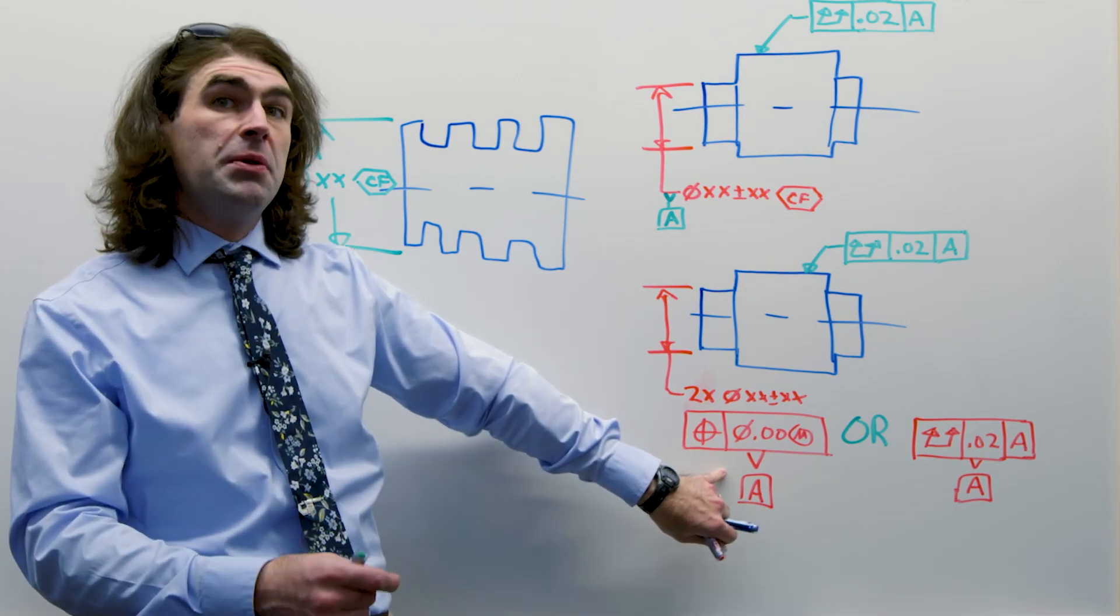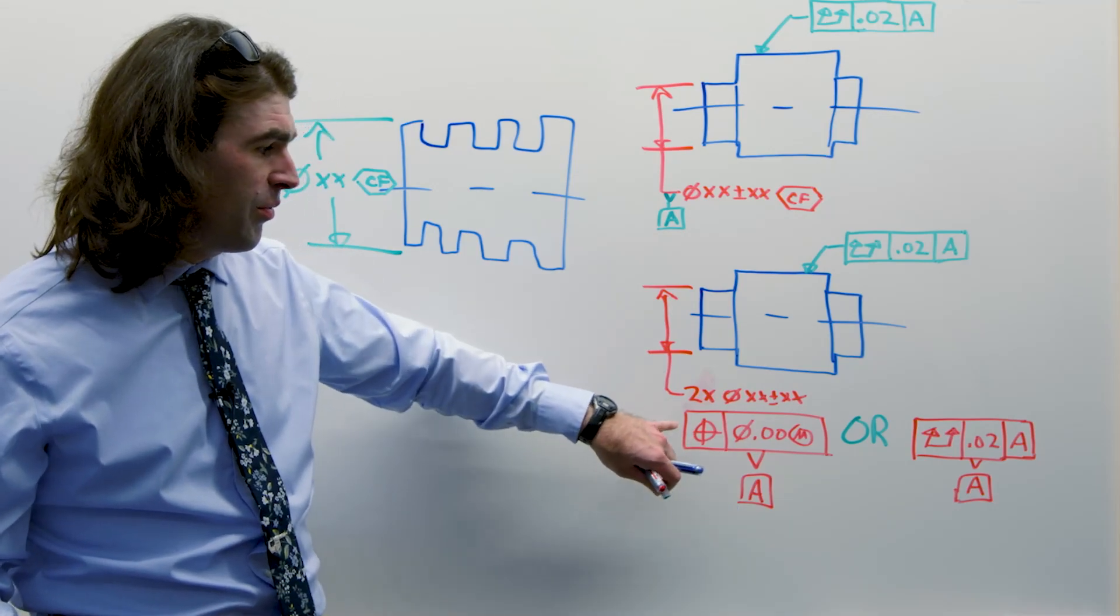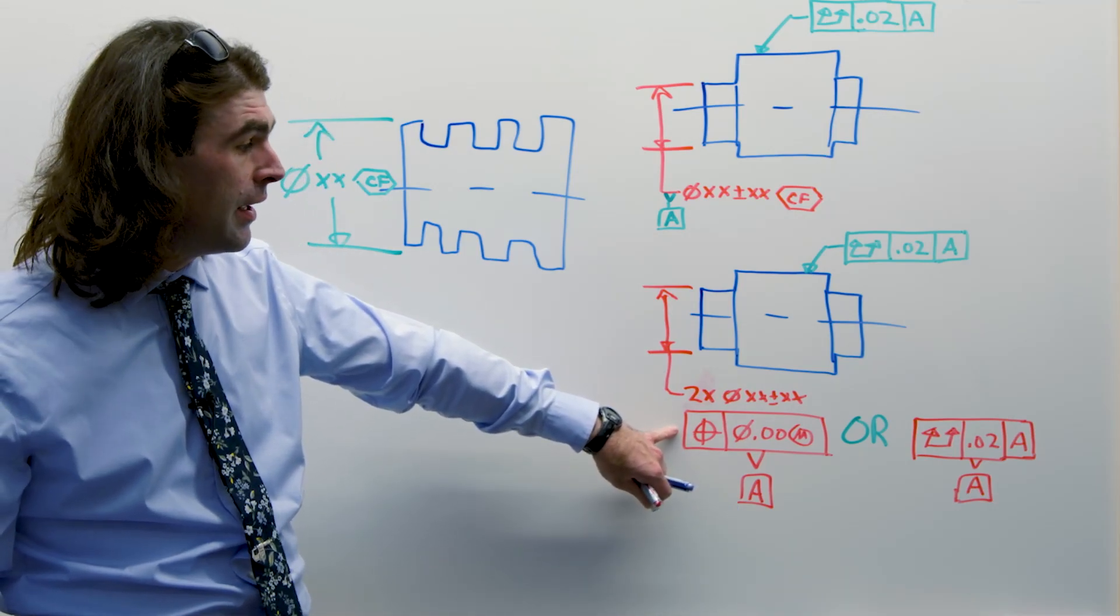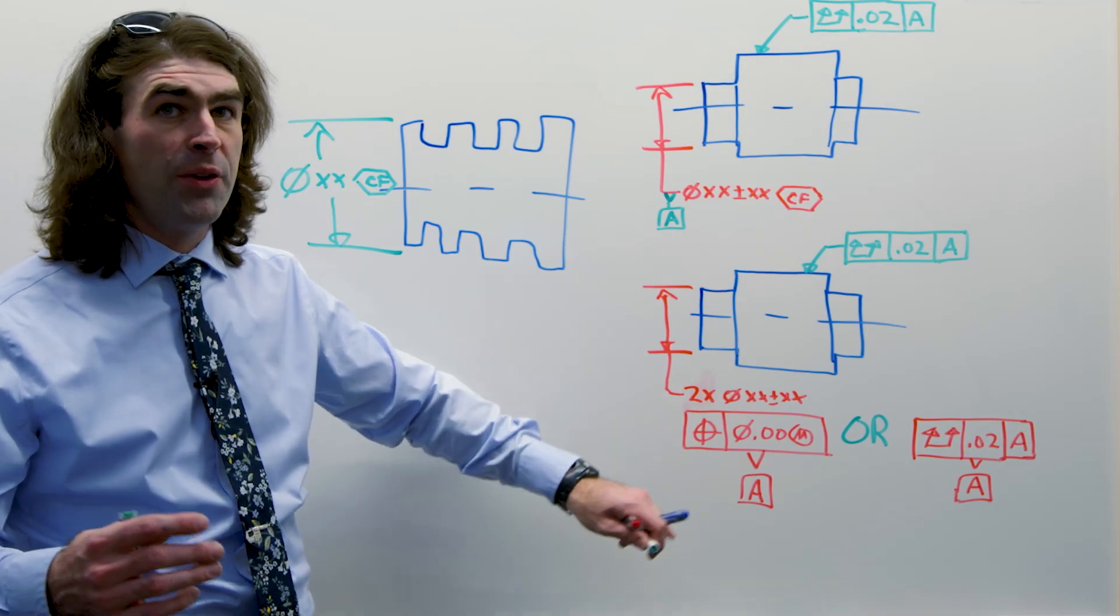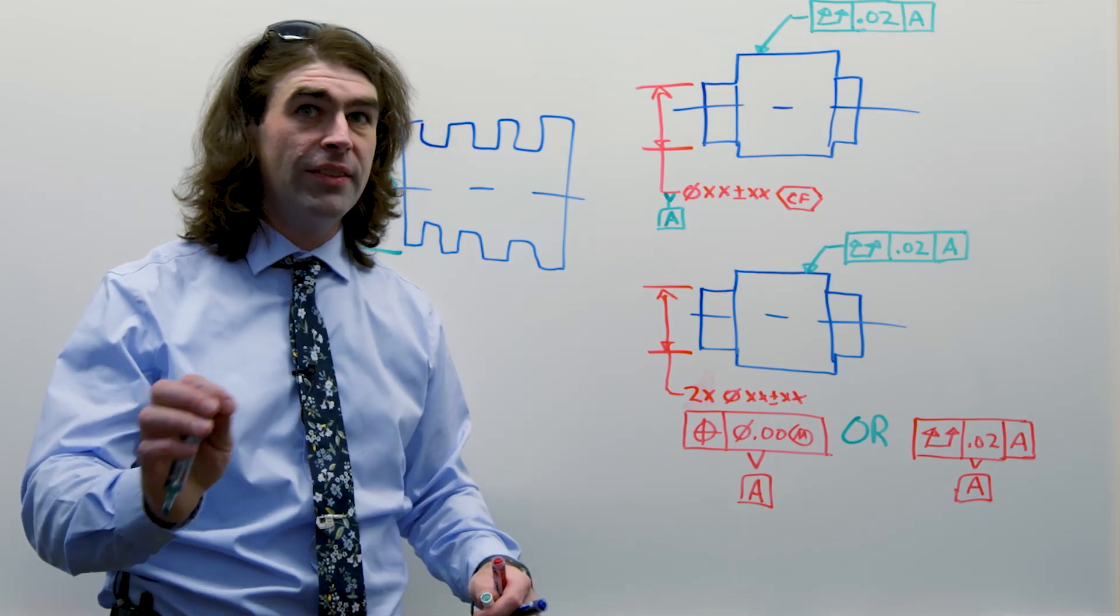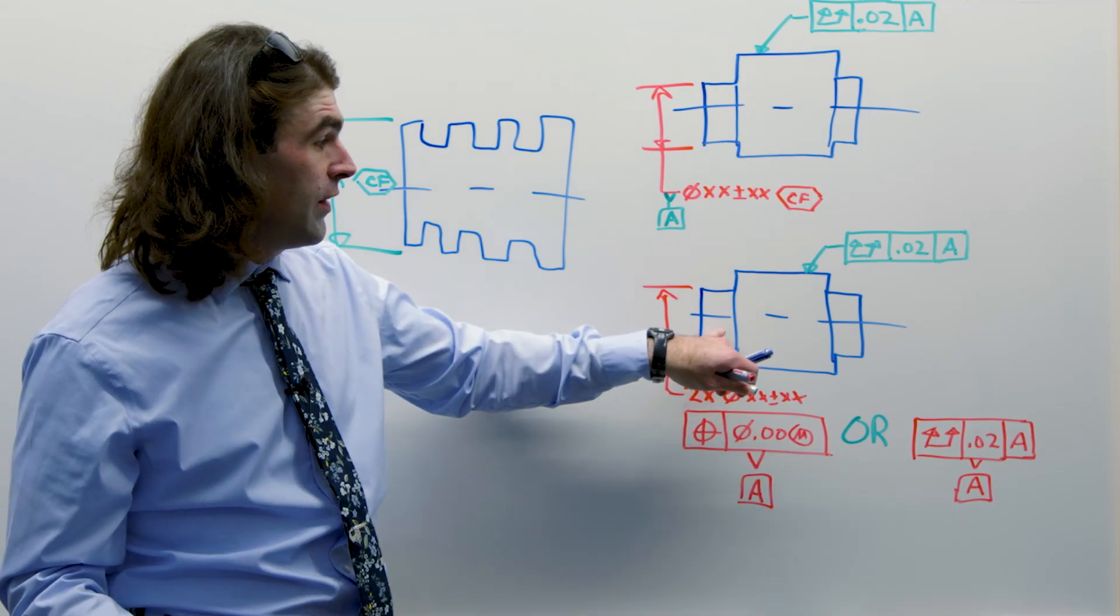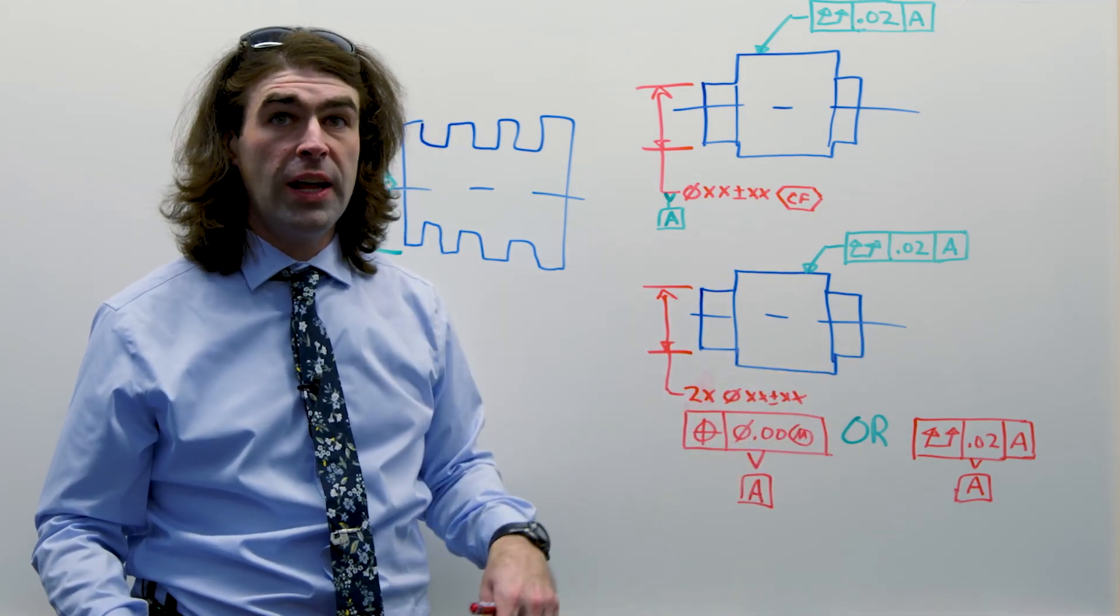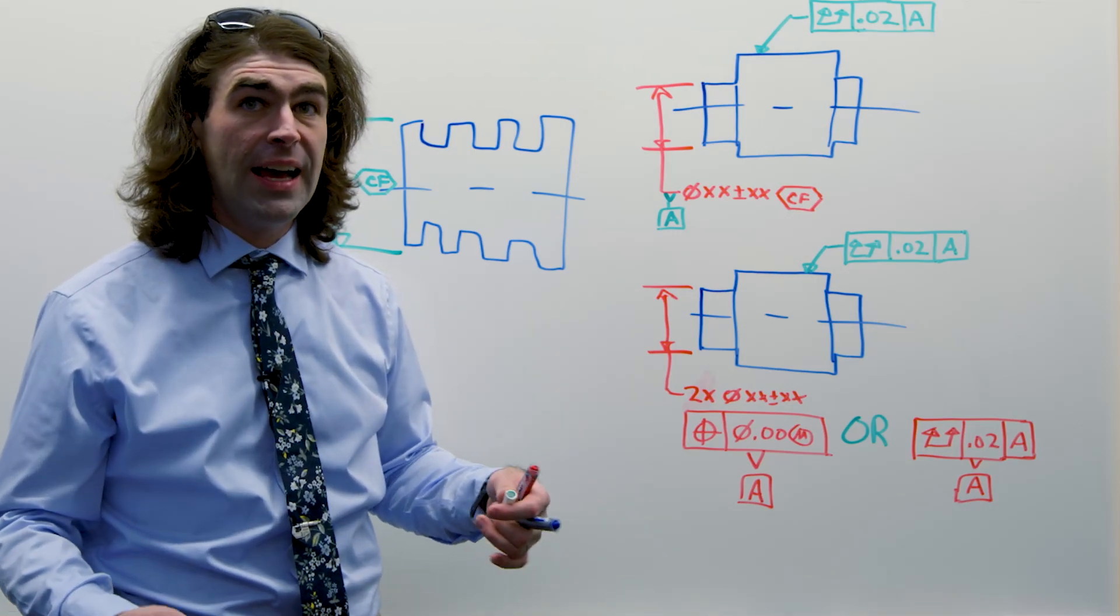Now, in this case, you need to control the coaxiality. So I'm going to show it with position here, 0 MMC. When I'm teaching position, I always say the position always has to have datum references, except this one time. And this is that one time. We're controlling the position of this cylinder to this cylinder with no datum reference, and it's going to serve as a primary datum for something else.